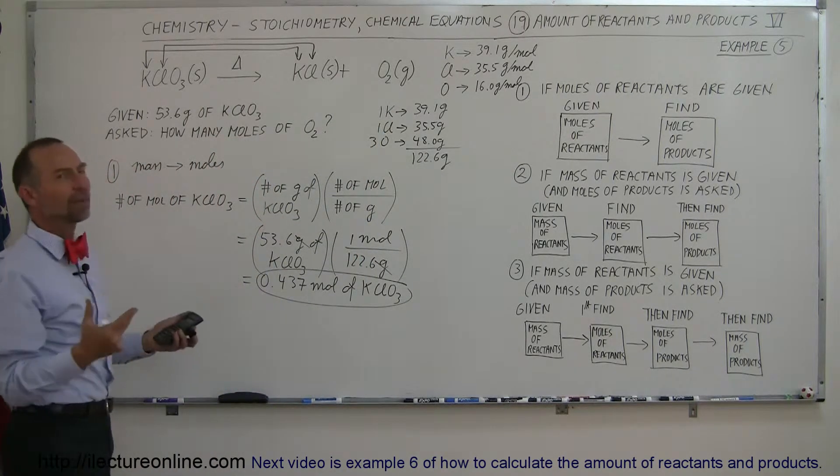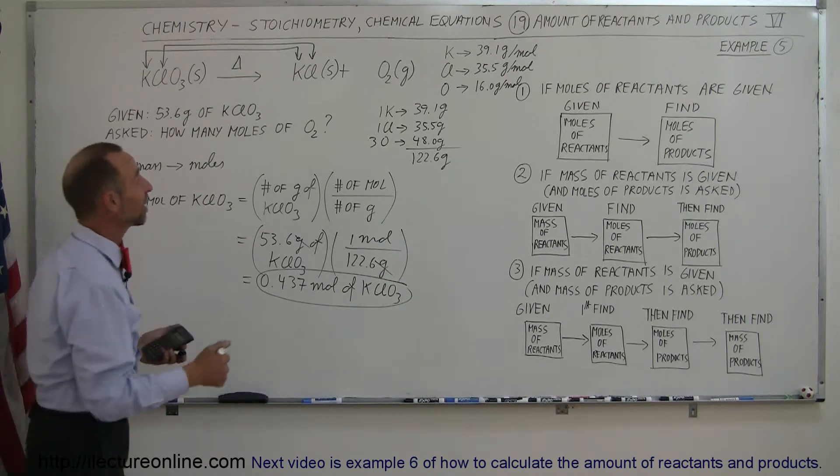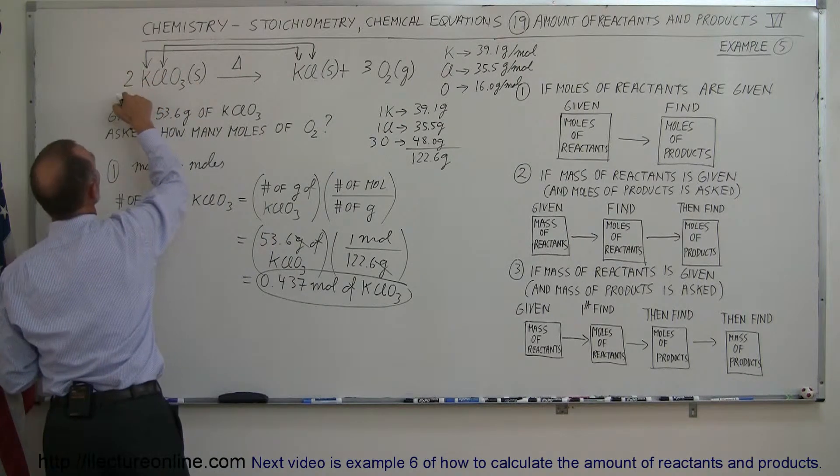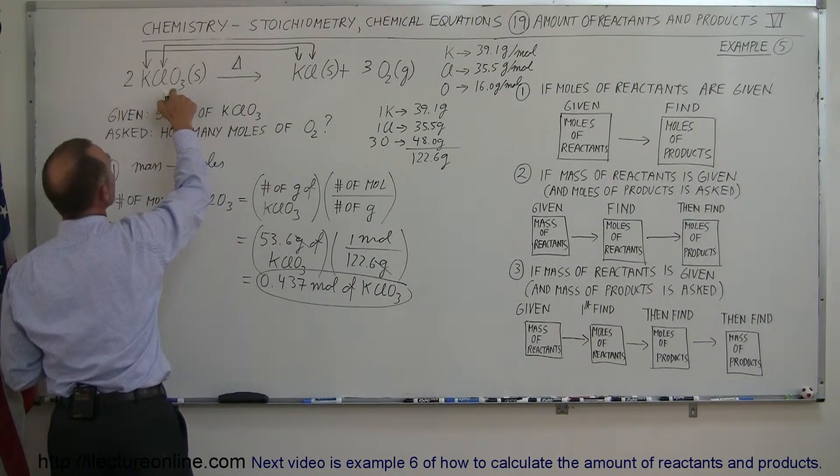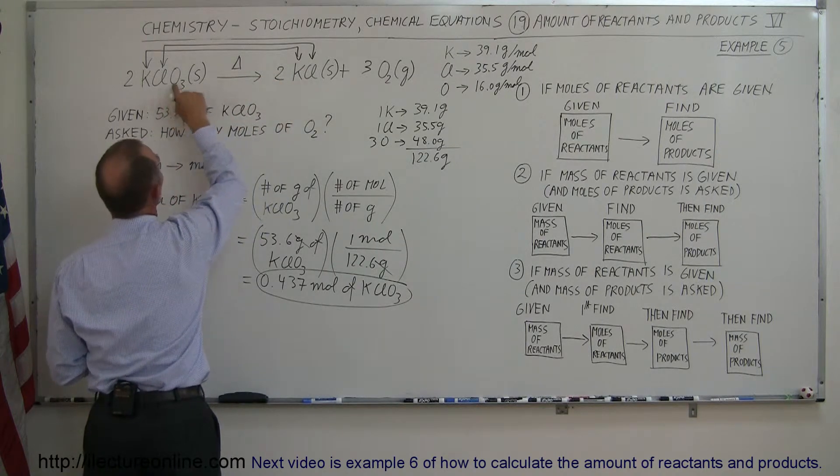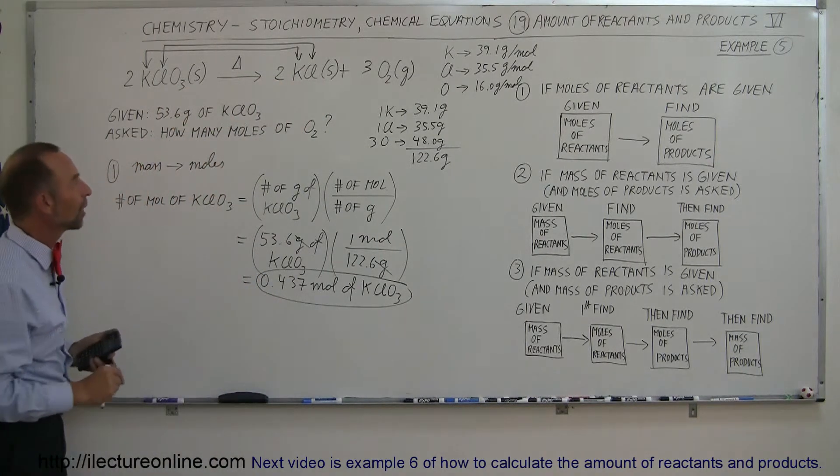So the lowest common denominator between two and three is six. That means I need three here to make six oxygens, and I'll need two there to make six oxygens, which means that also we'll need to put a two there so that I keep potassium and chlorine balanced. So there's my balanced equation.